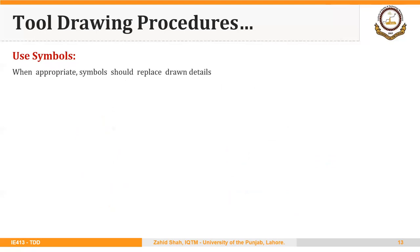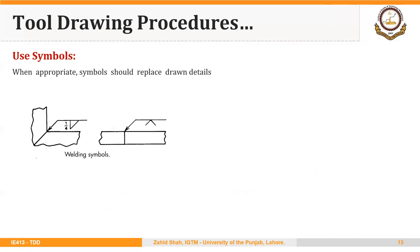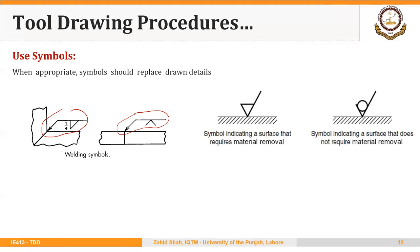Another important guideline is to use symbols where appropriate. For example, on a drawing we may use welding symbols, which can be found in the machinery's handbook. There are also two commonly used symbols for machining: one symbol indicates that a surface requires material removal, while another indicates that no material removal is required. Symbols for surface finish are also used, for example to indicate if a surface is to be ground or lapped.